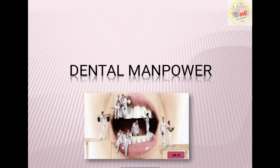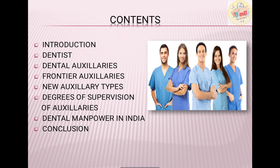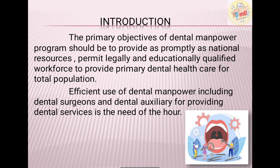Today we are going to see about an important topic in the public health industry: dental manpower. The contents include who is a dentist, dental auxiliaries, frontier auxiliaries, new auxiliary types, degree of supervision of auxiliaries, and dental manpower in India. The main primary objective of dental manpower is the efficient use of dental surgeons and dental auxiliaries for providing primary dental health care for the total population.